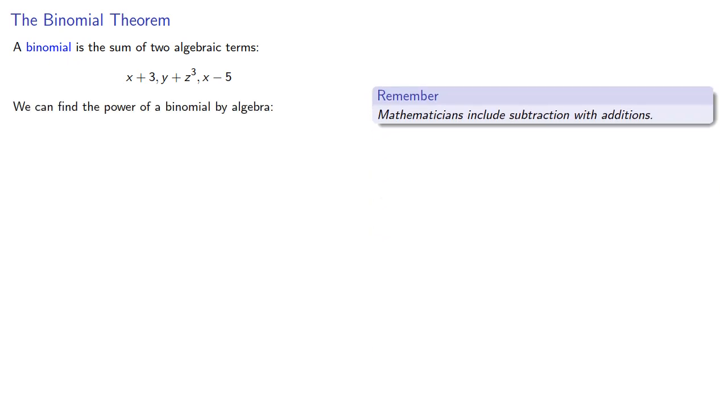We can find the power of a binomial using algebra. So (x+3)³ is the product of three factors of x+3, and we can expand.